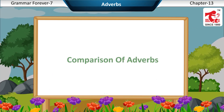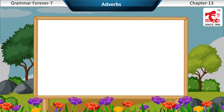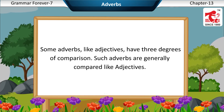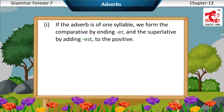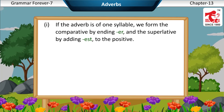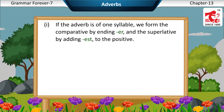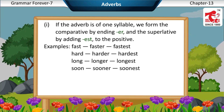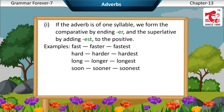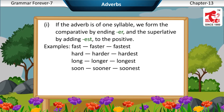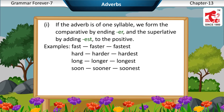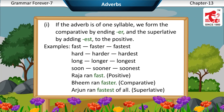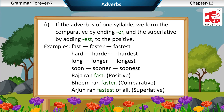Comparison of adverbs: Some adverbs, like adjectives, have three degrees of comparison. Such adverbs are generally compared like adjectives. First, if the adverb is of one syllable, we form the comparative by adding -ER and the superlative by adding -EST to the positive. Examples: Fast, Faster, Fastest; Hard, Harder, Hardest; Long, Longer, Longest; Soon, Sooner, Soonest. Raja ran fast (positive). Dheem ran faster (comparative). Arjun ran fastest of all (superlative).